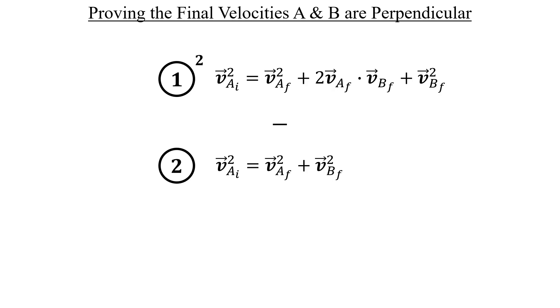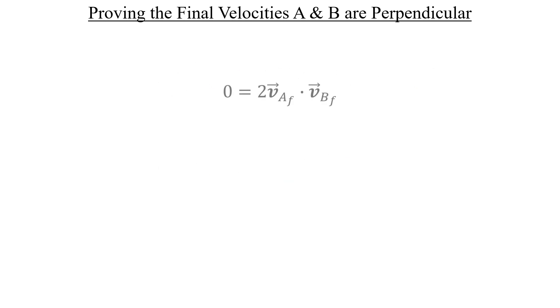We can see that the left-hand side cancels out completely, and on the right, the similar velocity squared terms for A and B will cancel out as well. And what's left is this. We should probably divide both sides by two as well. And when we do that, we arrive at the heart of the reason why those final velocities are perpendicular to one another.